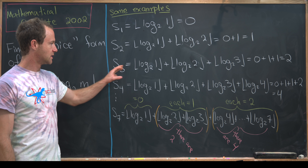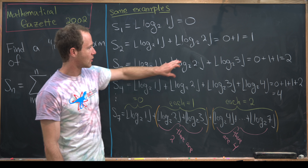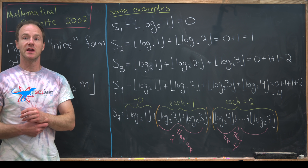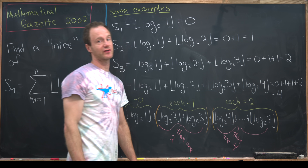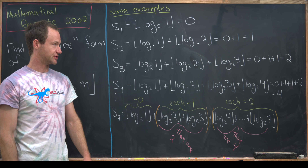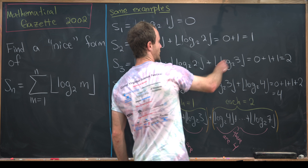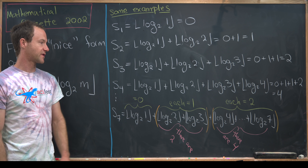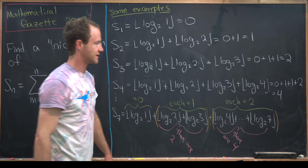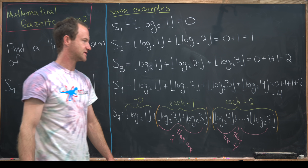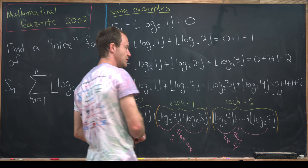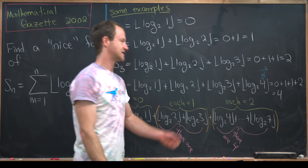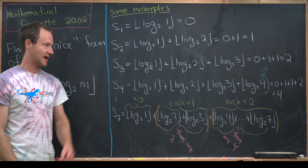For S₄, we've got 0 here and 1 here, but then log base 2 of 3 is going to be between 1 and 2, because 3 is strictly less than 4, which equals 2 squared. So when we take the floor, we get 1 again, giving us 0 plus 1 plus 1, or 2. Then for the fourth term, log base 2 of 4 equals log base 2 of 2 squared, so we get 2.